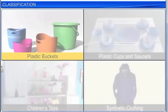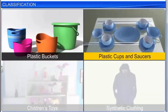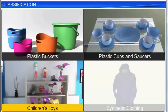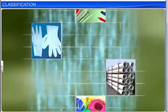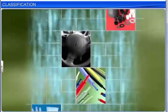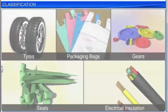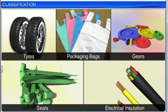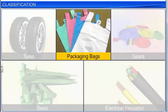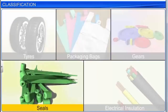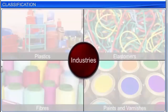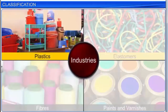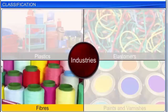Polymers are used in the manufacture of plastic buckets, plastic cups and saucers, children's toys, and synthetic clothing material. Plastics brought about remarkable changes in society and made life easier and more comfortable. Other materials made from polymers include automobile tires, packaging bags, gears, seals, and electrical insulation. Polymers are the basis for four major industries: plastics, elastomers, fibers, and paints and varnishes.